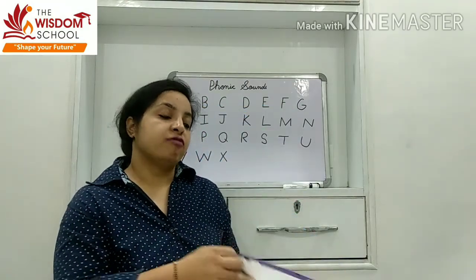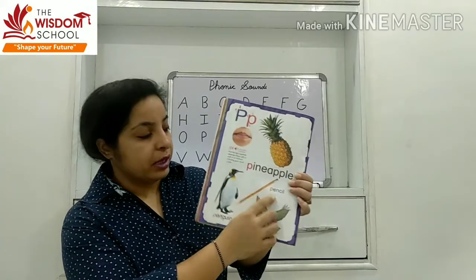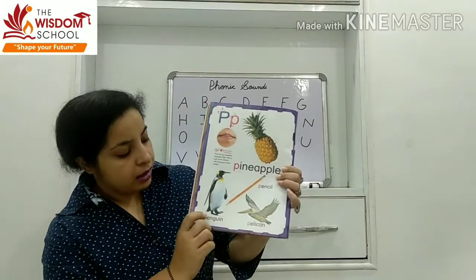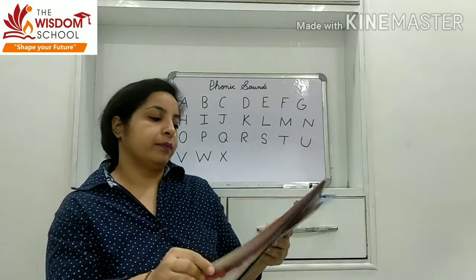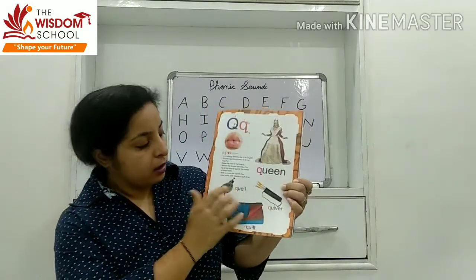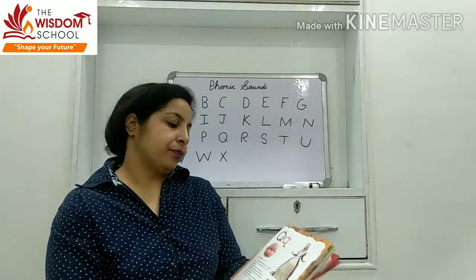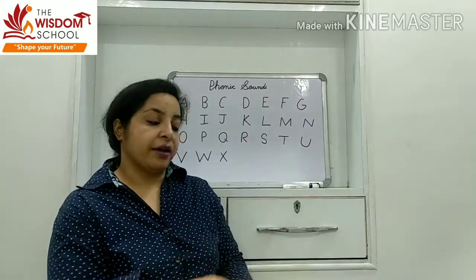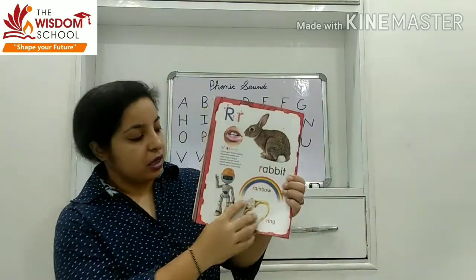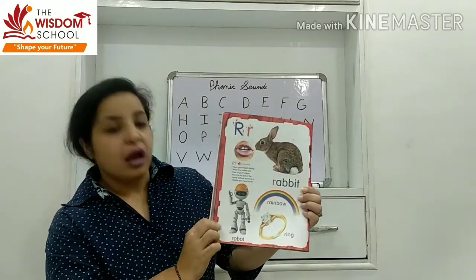Letter P — sound is 'p' — pineapple, pencil, pelican, penguin. Q — quack, queen, quail, quilt. R — rabbit, rainbow, ring, robot.